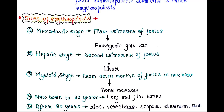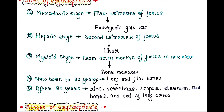Next is the myeloid stage. From 7 months of fetus to newborn, erythropoiesis occurs in the bone marrow. From newborn to 20 years, erythropoiesis occurs in long and flat bones. After 20 years, it occurs in the ribs, vertebrae, scapula, sternum, skull bones, and the ends of long bones.